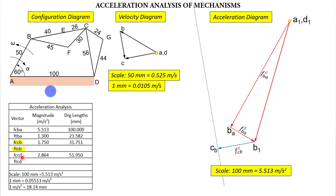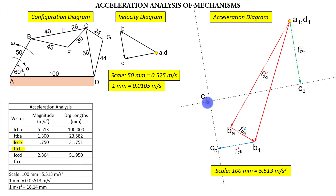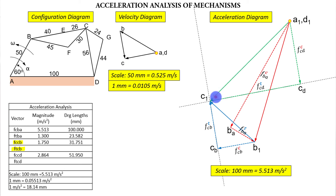Now locating C with respect to D. The centripetal component of C relative to D is parallel to link CD, directed towards D — downwards. Its value is 51.95 mm. We don't know the tangential component, so we draw a perpendicular line to this green line from D1. These two perpendicular lines — tangential of BC and tangential of CD — intersect at C1. The solid lines from B1 to C1 and D1 to C1 represent total accelerations of links CB and CD respectively.